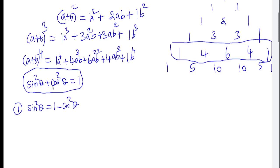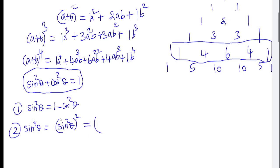For sin⁴θ: sin⁴θ = (sin²θ)². Since sin²θ = 1 − cos²θ, we write sin⁴θ = (1 − cos²θ)². This is a (a − b)² form. Using Pascal's Triangle row for power 2, which is 1-2-1.